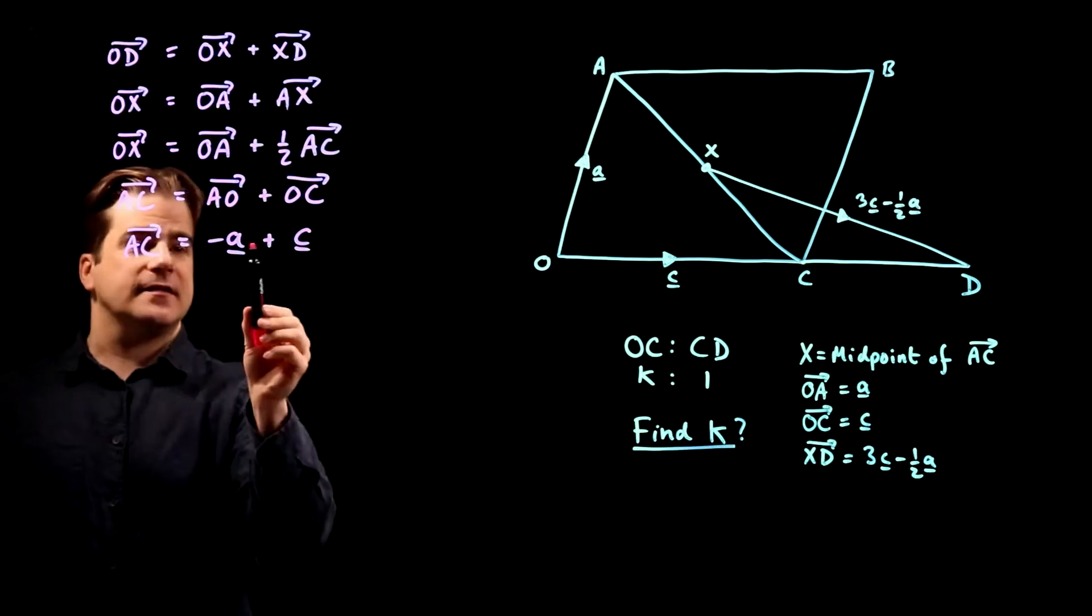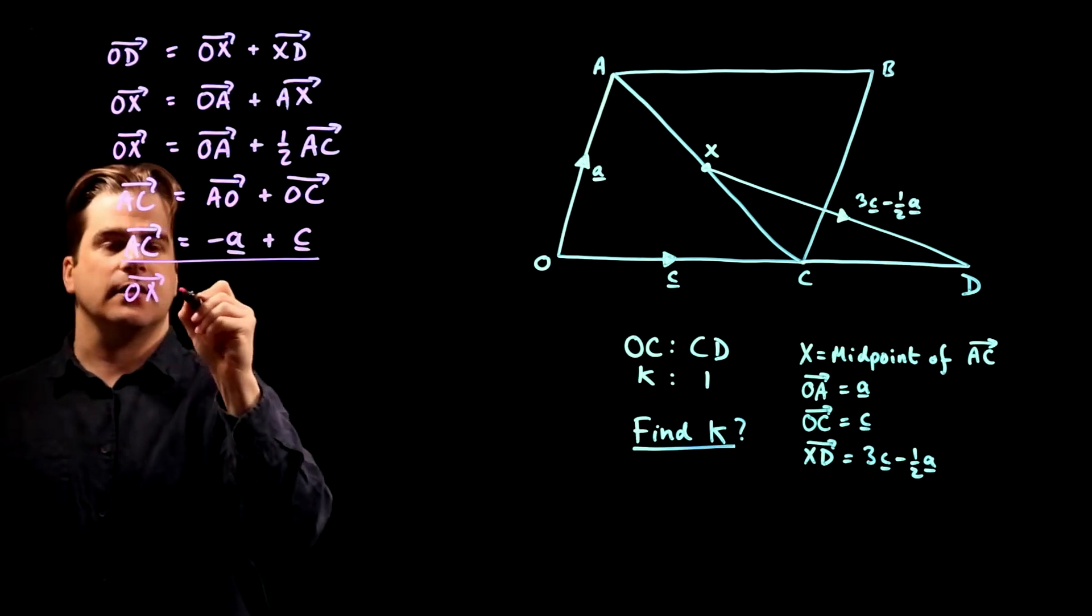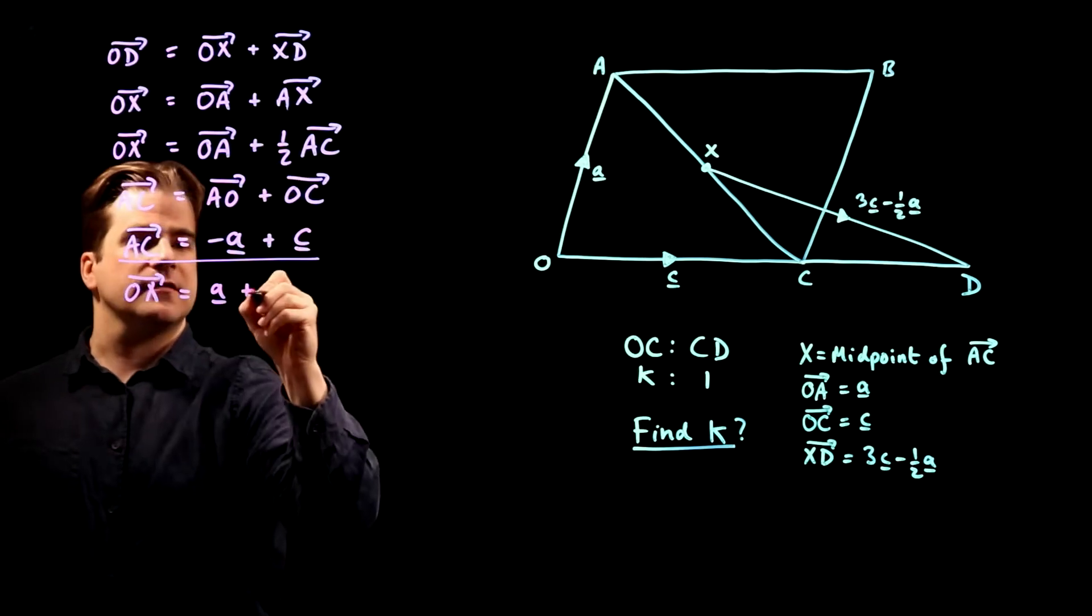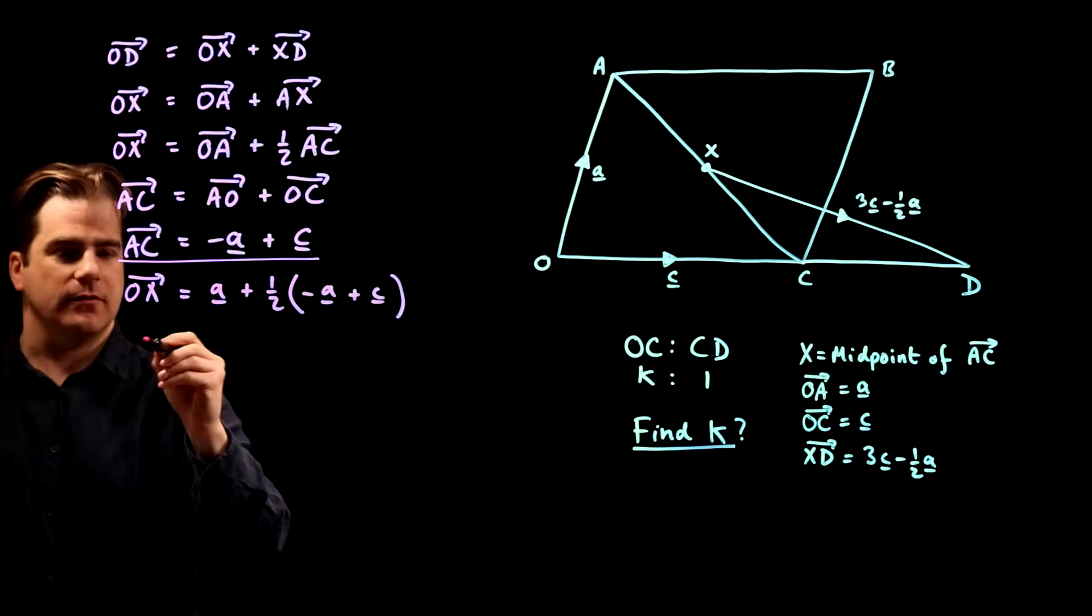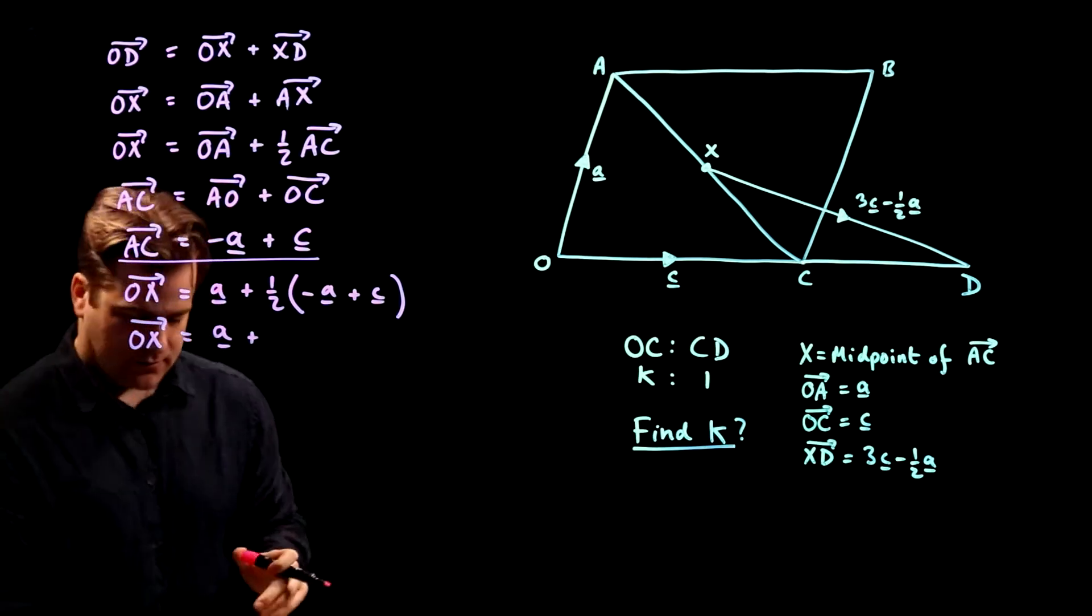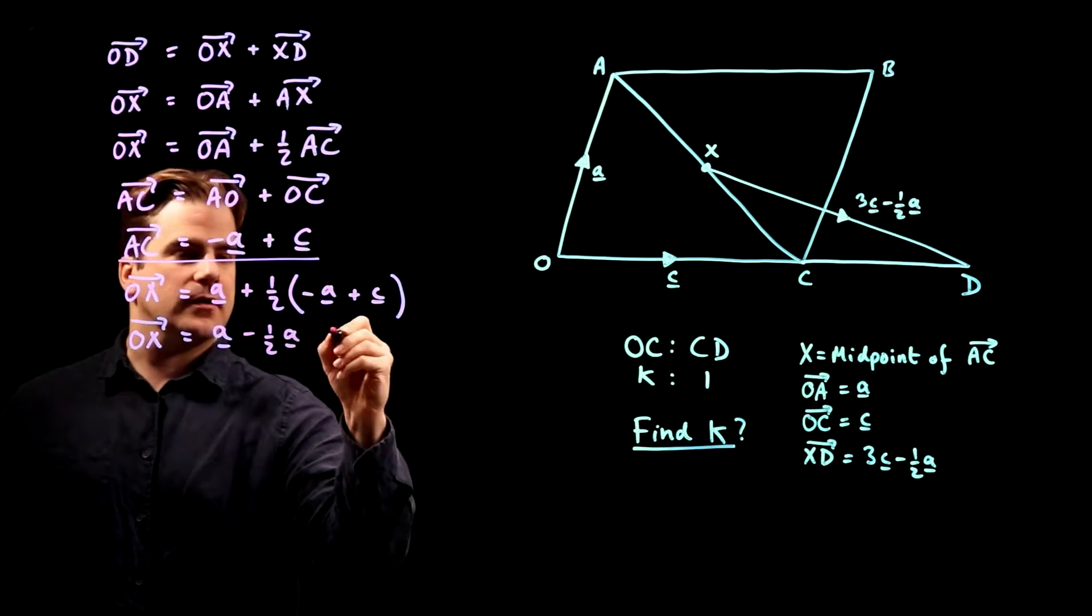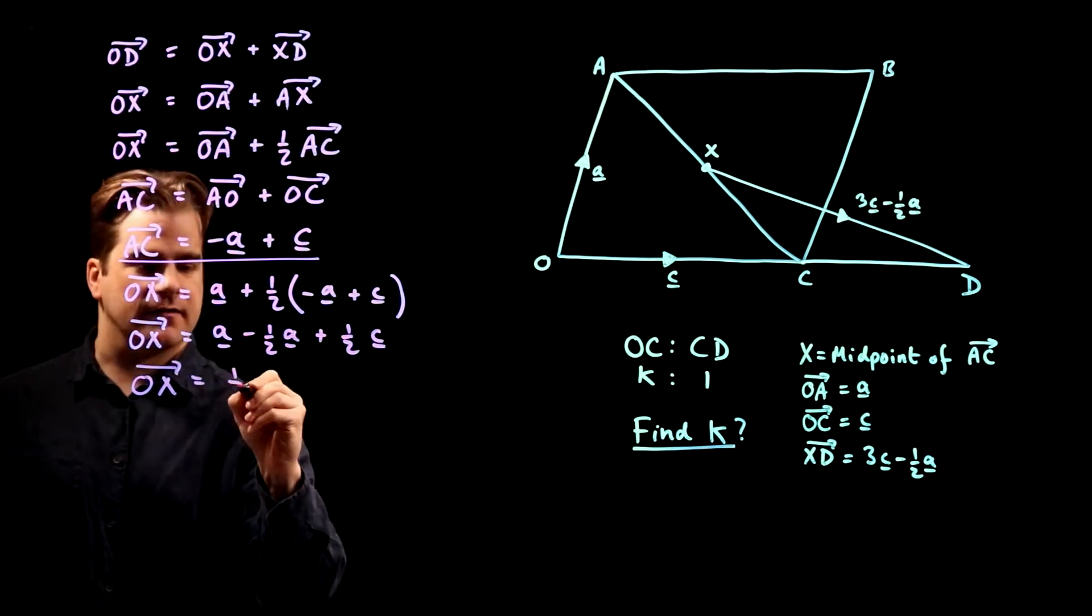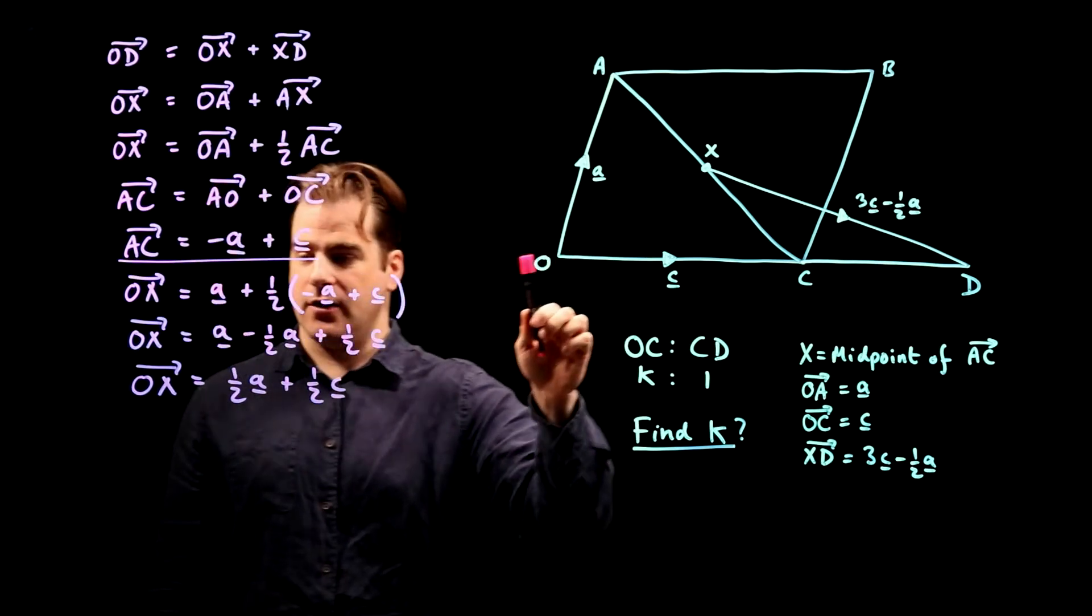Okay, so that's, we've got A to C, right? So therefore, O to X is O to A which is a, plus a half of A to C which is minus a plus c. Okay, so therefore O to X is a plus a minus half a plus half c. Okay, good. We've got, we know how to go from O to X now. We've got it in terms of things we definitely know.